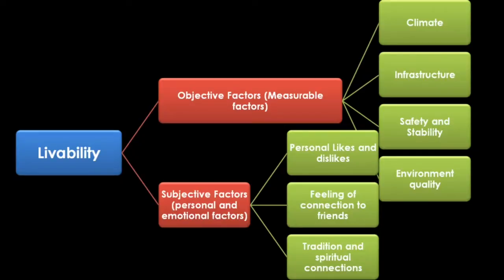Livability is generally measured by factors that provide a quality of life. It is measured on the basis of two factors: objective factors and subjective factors. Objective factors are measurable factors — they are climate, infrastructure, safety and stability, and environmental qualities. Subjective factors are personal and emotional factors — they are personal likes and dislikes, feeling of connection to friends, tradition and spiritual connections.